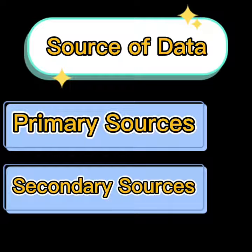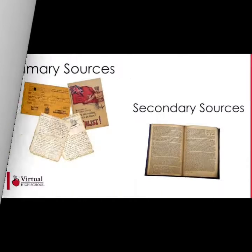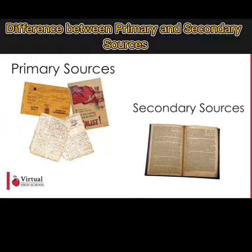Sources of data are broadly classified into two types. The primary sources, which are documents, numerical records, oral statements, relics and remains, and artifacts. The secondary sources, which are textbooks, encyclopedias, biographies, periodicals, and other references.